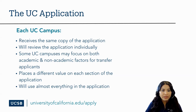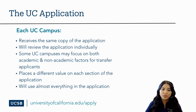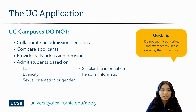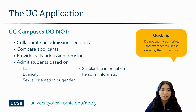Each UC campus places a different value on each application section, and we evaluate your achievements in light of the opportunities that were available to you. When reviewing your applications, the UC campuses will use almost everything — we don't ask a question that we don't want the answer to. UC campuses do not collaborate on admissions decisions or compare applicants to one another, and we do not provide early admissions decisions. The University of California asks for race, ethnicity, sexual orientation, gender, and religion within the application; however, these are not used in the selection process and are instead used for statistical purposes after admissions decisions are completed.